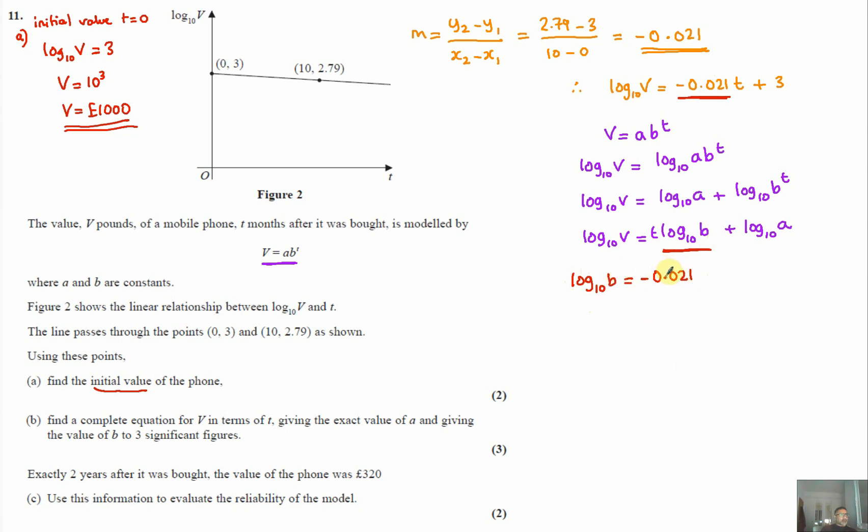And from there we can work out then 10 to the power of this will give us b. So b equals 10 to the power of minus 0.021, which we work that out, b equals 0.952796. And we only need it to three significant figures, so b equals 0.953.